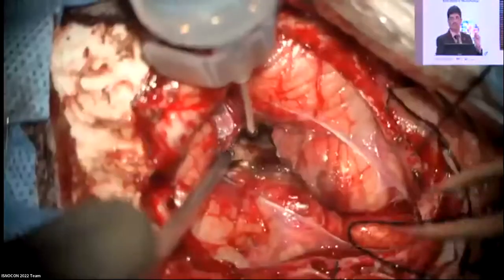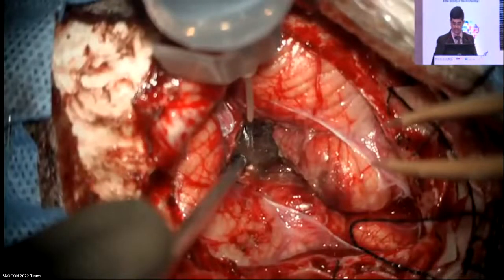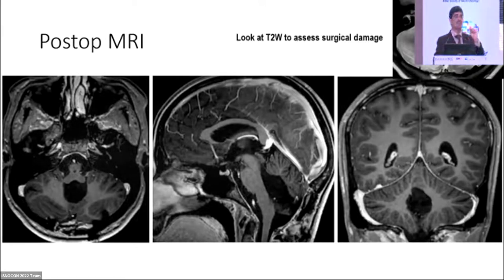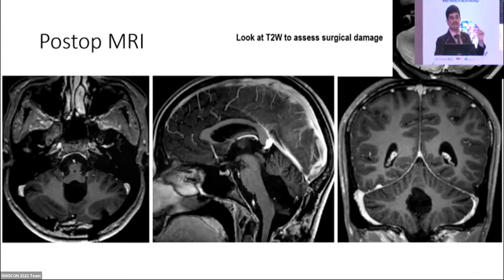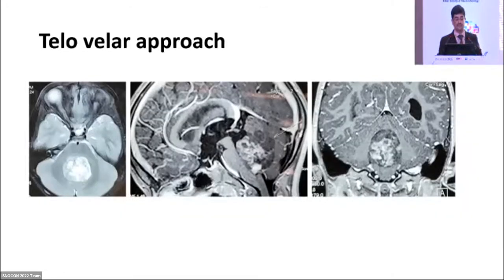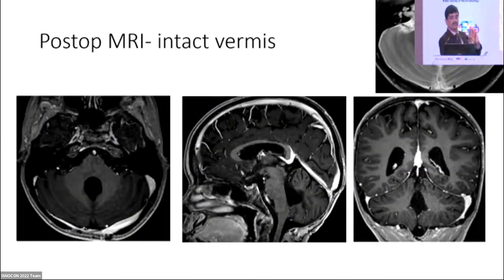We also look into the foramen of Luschka for tumor. Post-op MRI shows the vermis is intact. On T2 imaging, how the cerebellum and brainstem were handled during surgery is clearly visible — if the T2 image is clean with minimal signal change, it indicates very gentle tissue handling. Senior consultants can assess junior colleagues based on the T2 images. Again in the telovelar approach, post-op MRI confirms the vermis is intact, improving postoperative outcomes in these children.